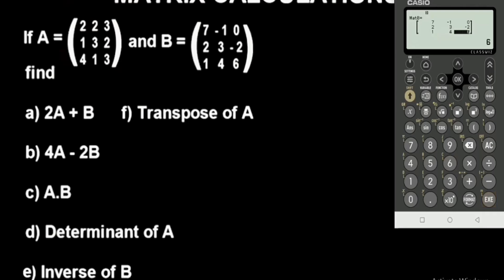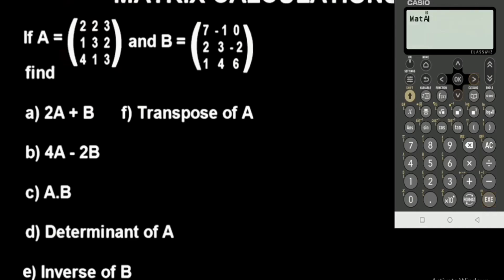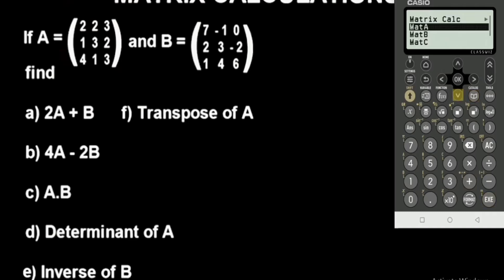These values are also stored. Let's go away from here and begin to find our results. Starting with addition: for Mat A plus Mat B, go to the catalog button, then the matrix option. Select Mat A, press plus, go to the catalog matrix option, navigate down to Mat B, and press execute. This gives you the addition result.